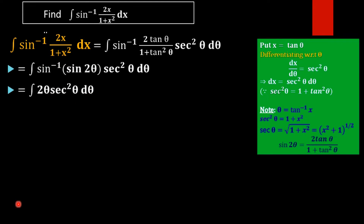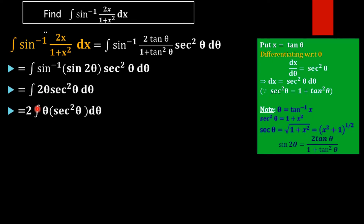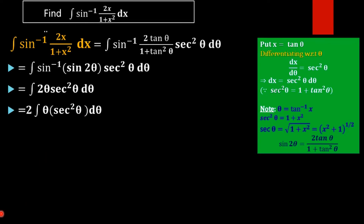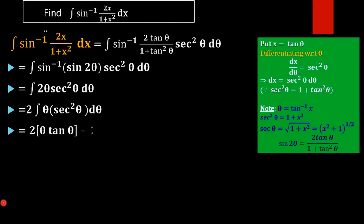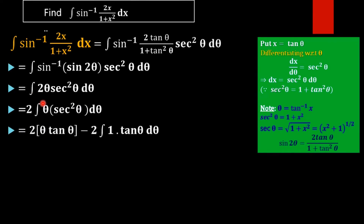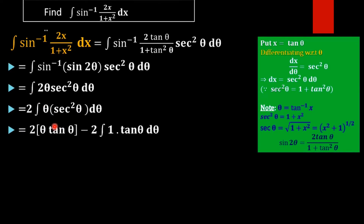Taking 2 outside, we apply the integration by parts method. We take u = θ as the first function and dv = sec²θ dθ as the second function.